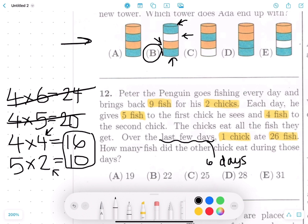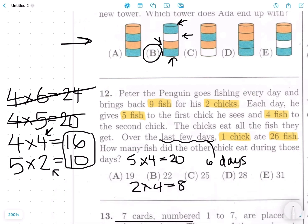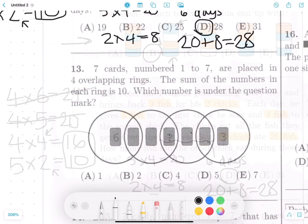So we just have to flip that for the other chick. If the first chick, or the chick that we've been talking about this whole time, got four fish on four days, that means the other chick got five fish those four days. So five times four equals 20. Let's fix that real quick. Five times four equals 20. For the last two days, that fish got two times four is equal to eight. So 20 plus eight equals 28. That's the amount of fish the other chick got.